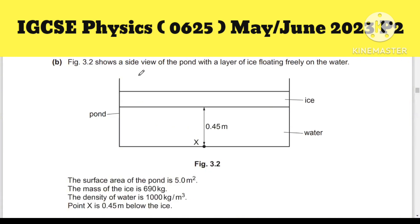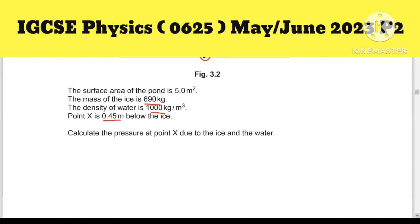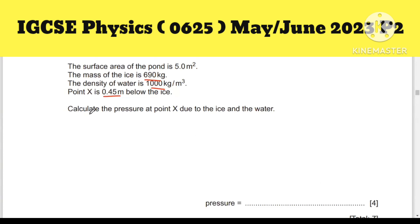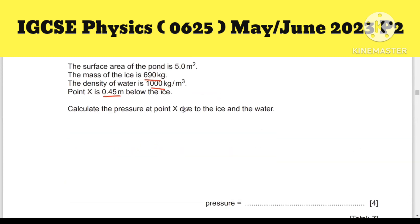Question 3b: Figure 3.2 shows a side view of the pond with a layer of ice floating freely on water. The height from bottom to ice is 0.45 meters. The surface area of the pond is 5 m^2. The mass of ice is given, and the density of water is given. Point X is 0.45 meters below the ice. Calculate the pressure. There are two types of pressure: this point feels two types of pressure—pressure due to ice and pressure due to water.